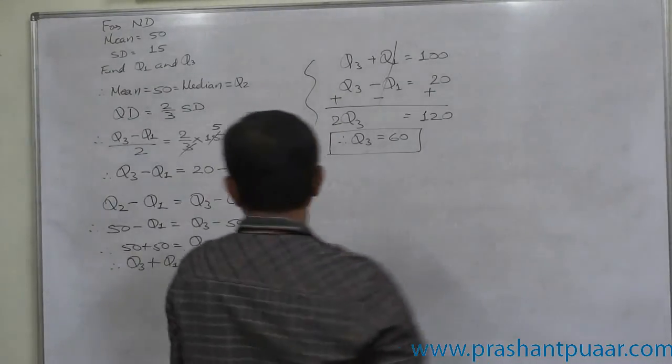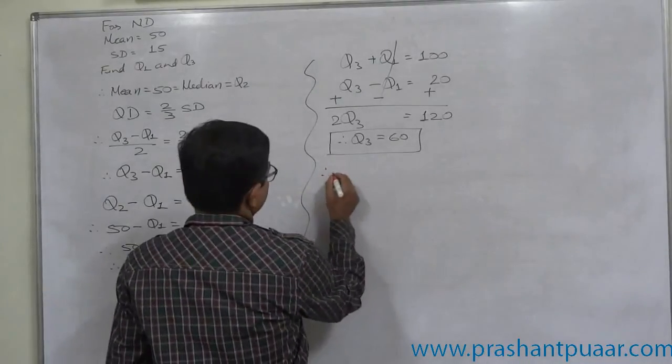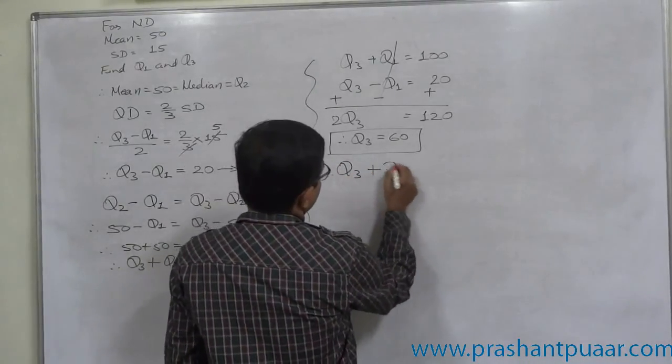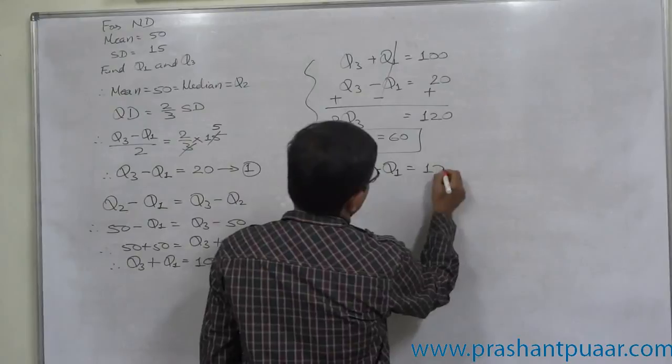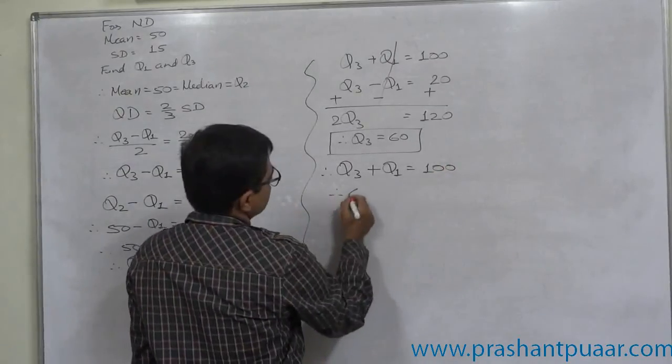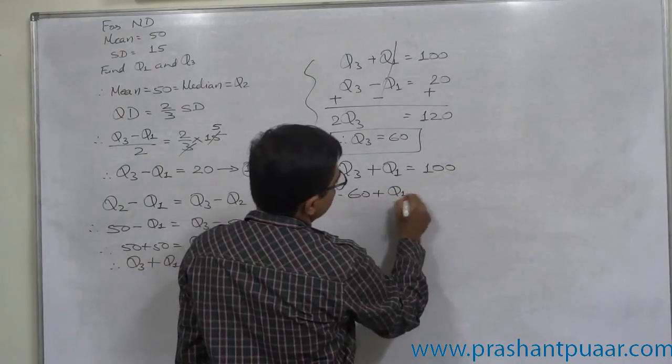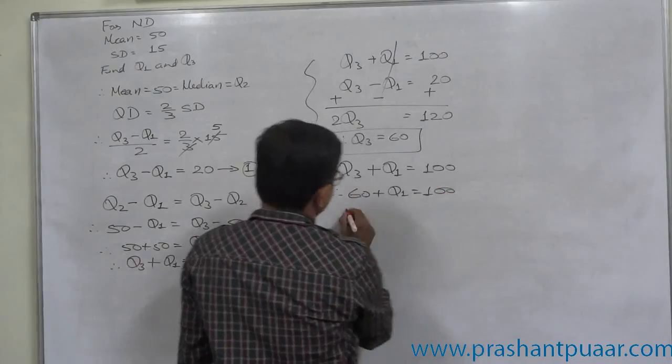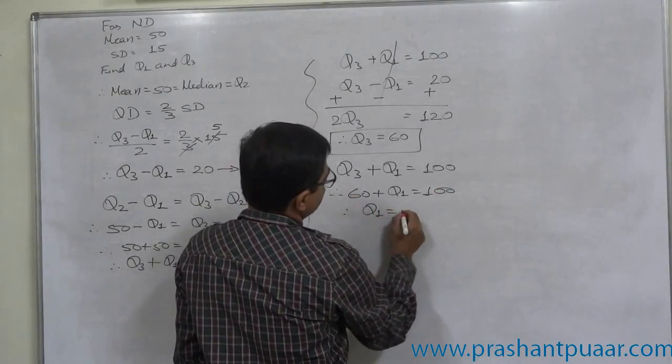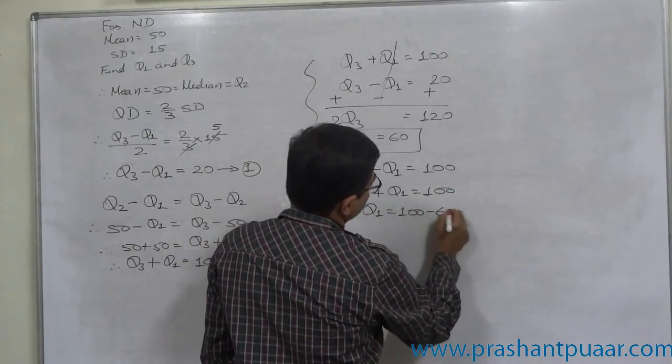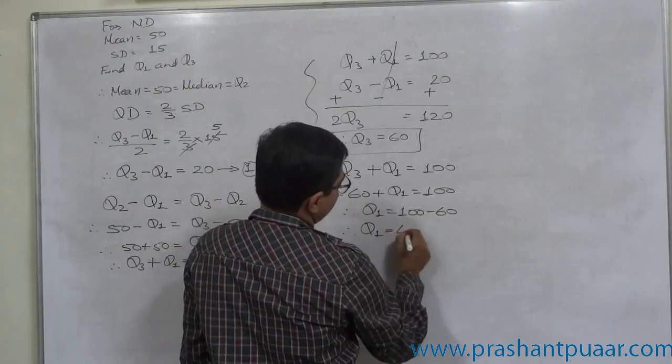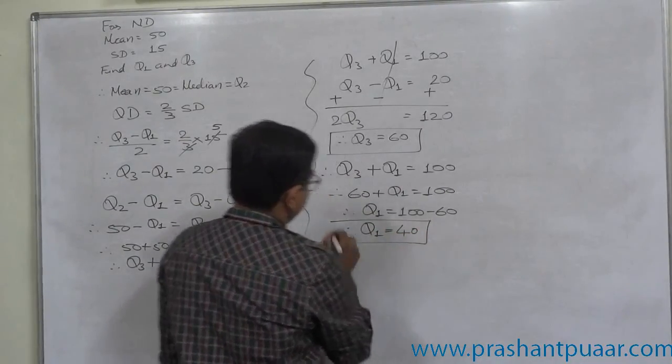That will give us the value of Q1. Say, Q3 plus Q1 equals to 100. That means, 60 plus Q1 equals to 100. So, Q1 equals to 100 minus 60, or this is possible only if Q1 equals to 40.